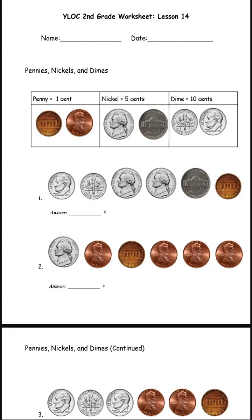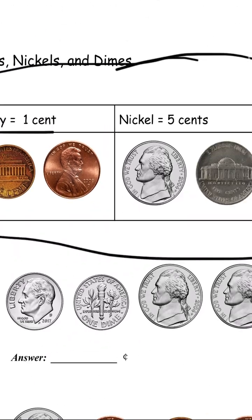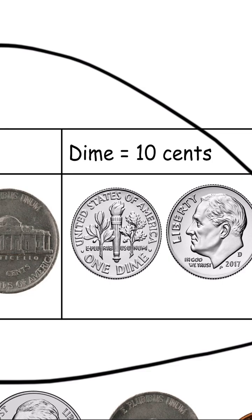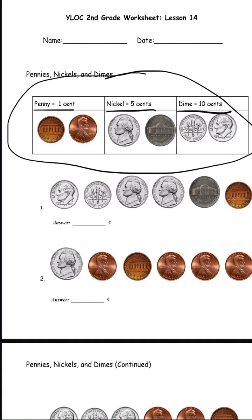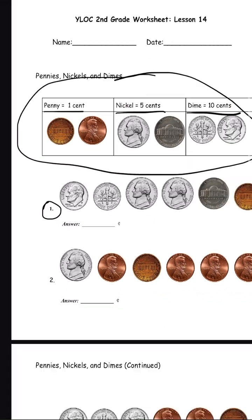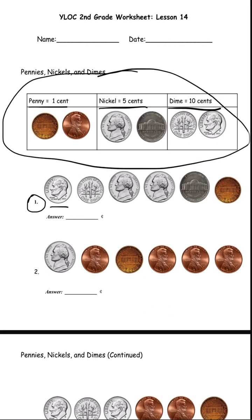Hello, today we're going to work on lesson 14 and we're going to first look at pennies, nickels, and dimes. There is a chart over here: a penny is one cent, a nickel is five cents, and a dime equals ten cents. So let's look at number one — this one is a dime, if you look at the chart.